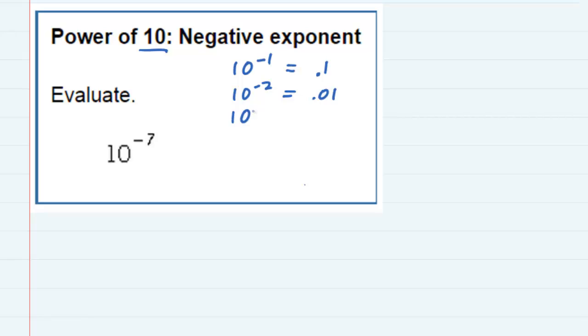And the pattern continues. 10 to the negative 3rd would be the 1, but this time it would have to be three places behind the decimal. Be careful that you're not counting those zeros. We're counting the number of places that the 1 is behind the decimal. And since we need some fillers, that's why the zeros come in.